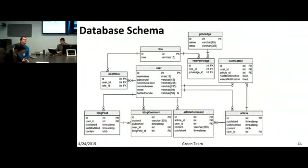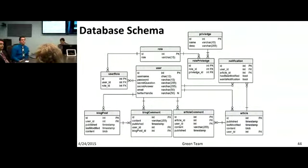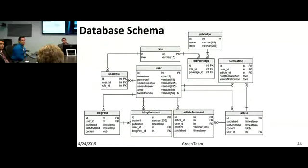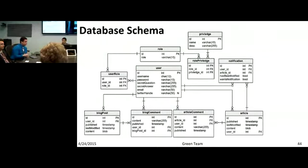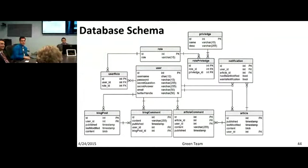Here is the relation of what all those tables will be doing. For a user, you have a role — a use-role joint table since a user could have many roles. Then you have a role-privilege joint table since a role could have many privileges. So a user with a certain role — like admin — can have many roles.